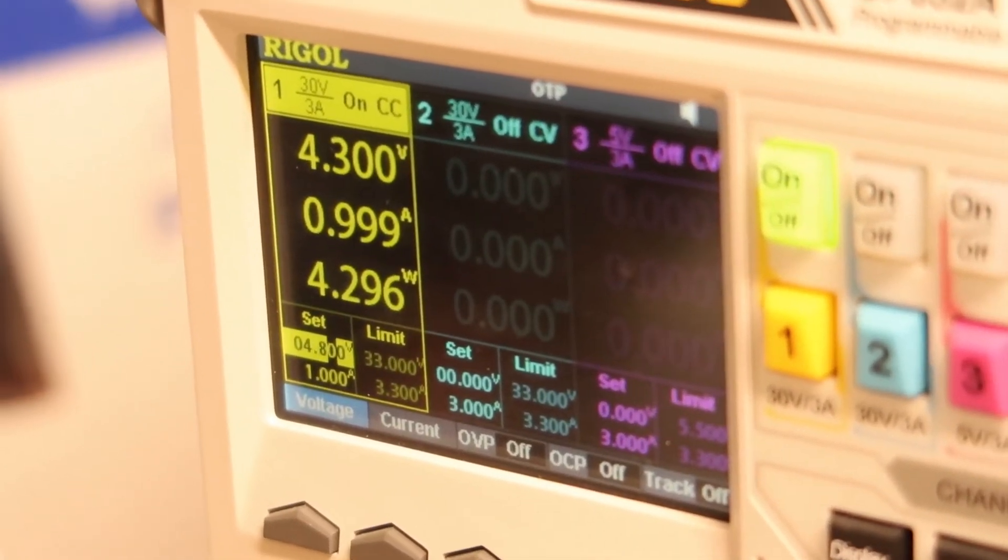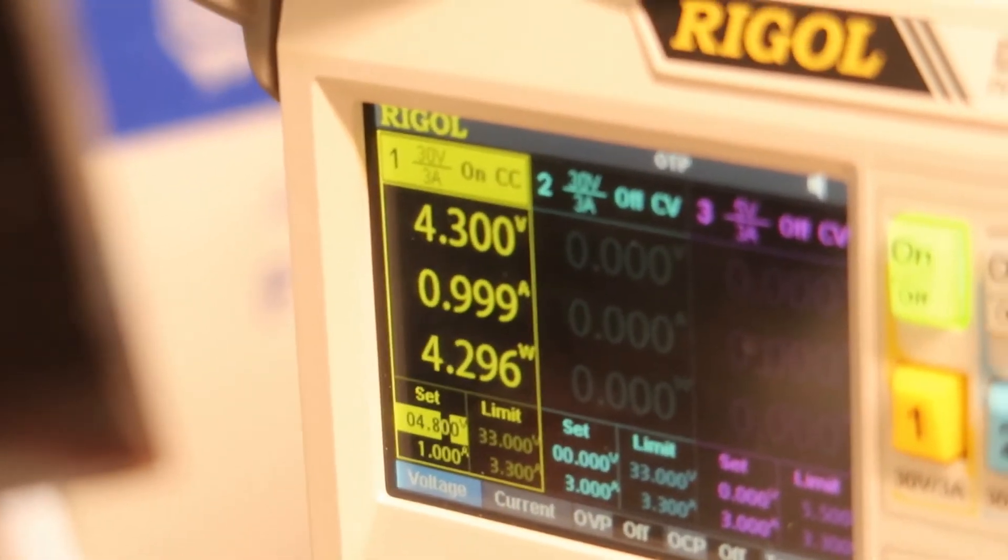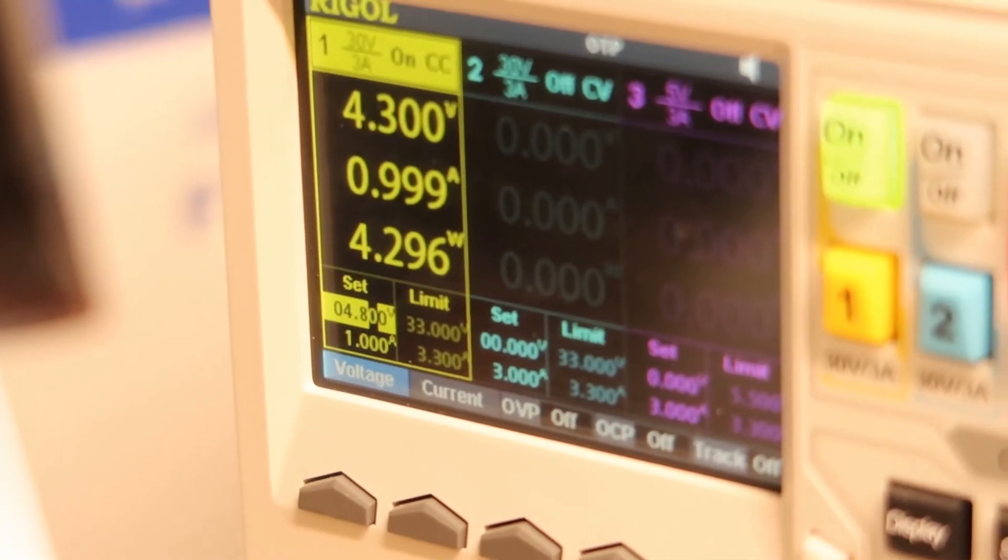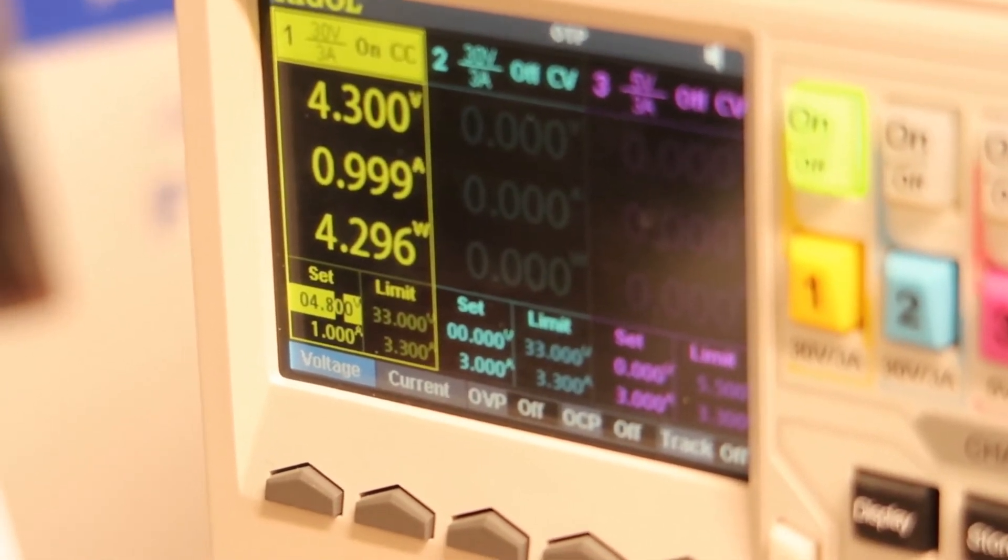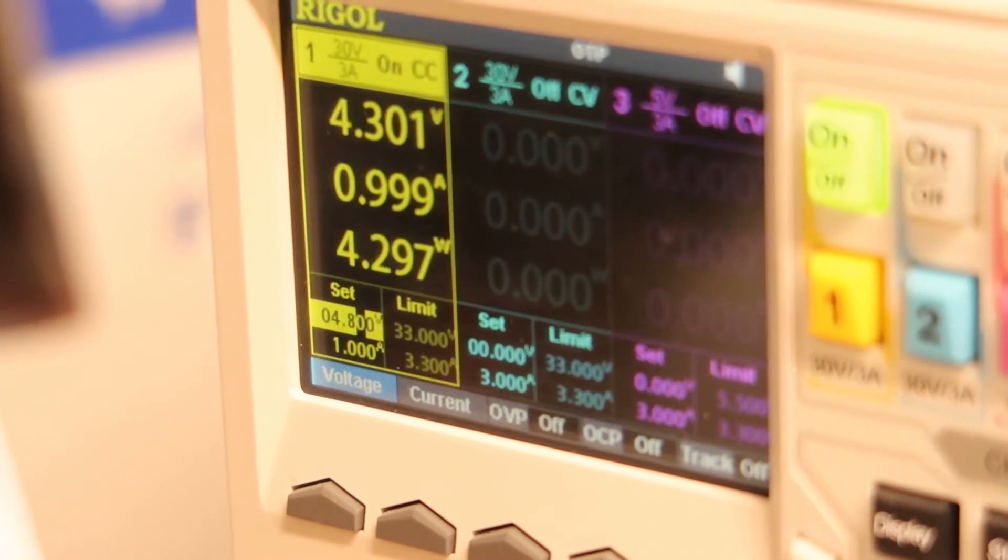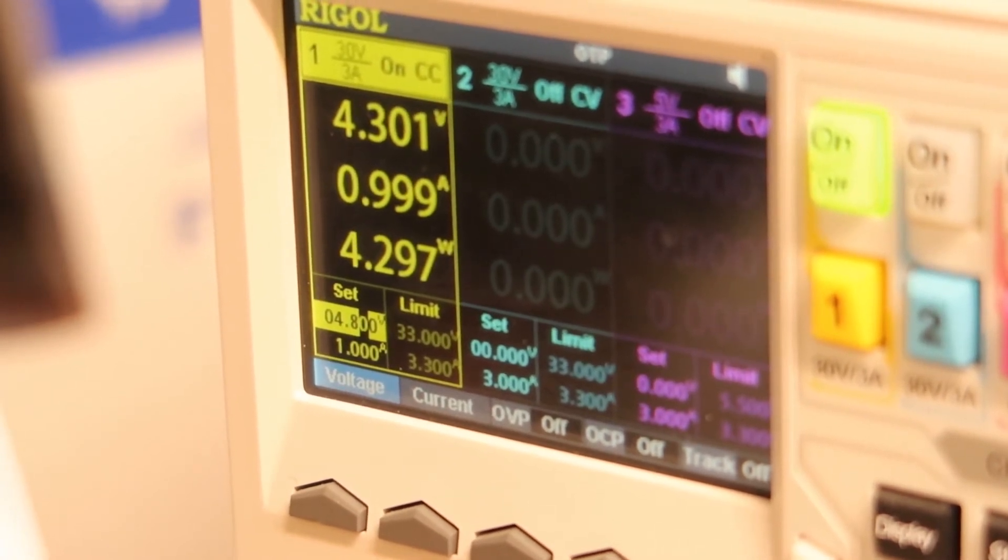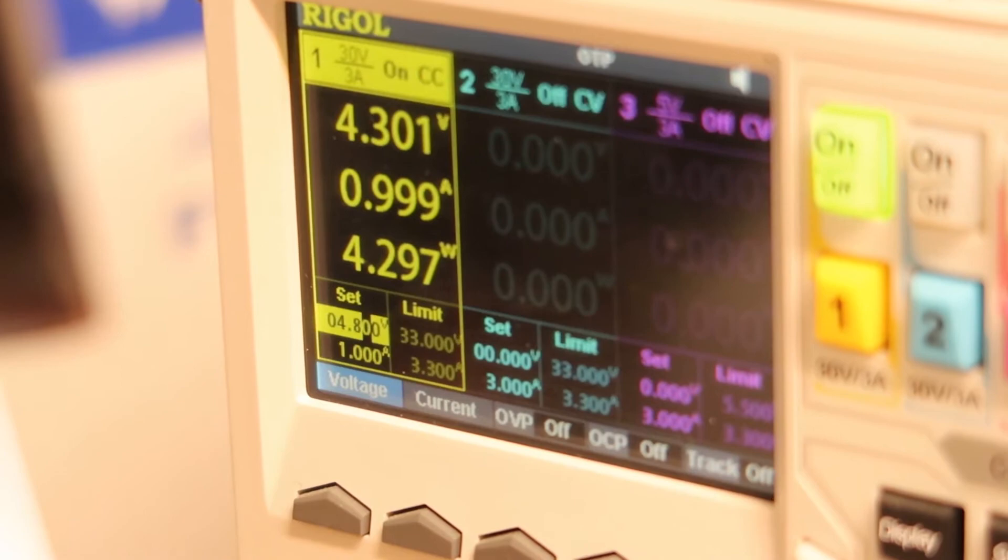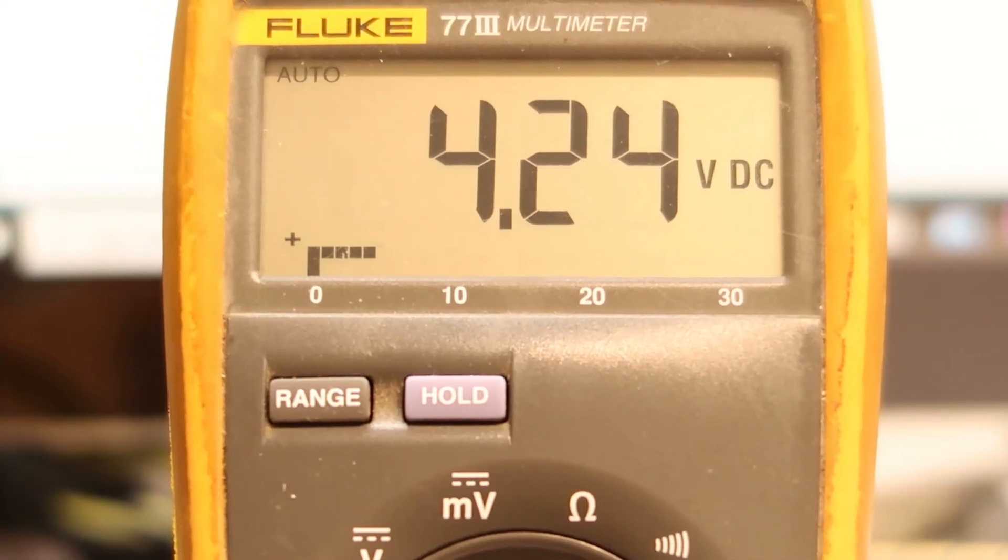Okay, so now I want to show I set the Rigol power supply for 4.8 volts but it stopped at 4.3. The count is 1 amp limit, it is still 1 amp limit, but when I check the battery...